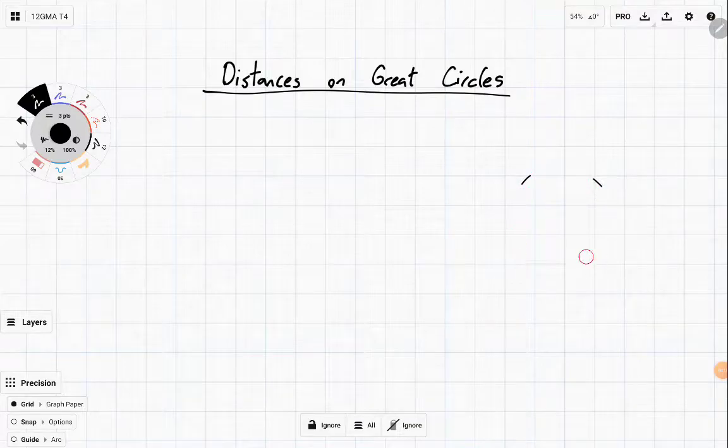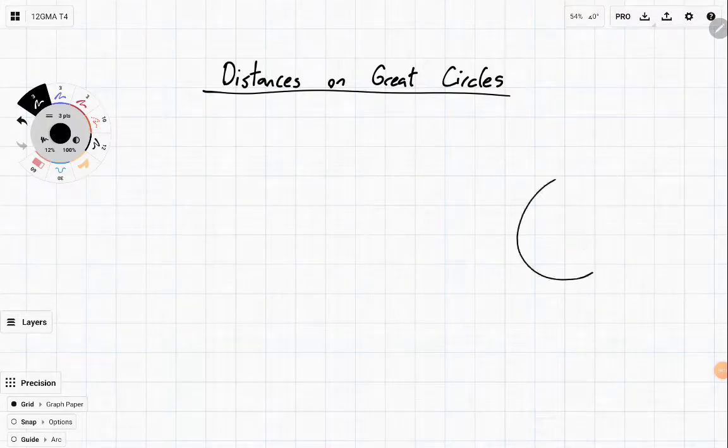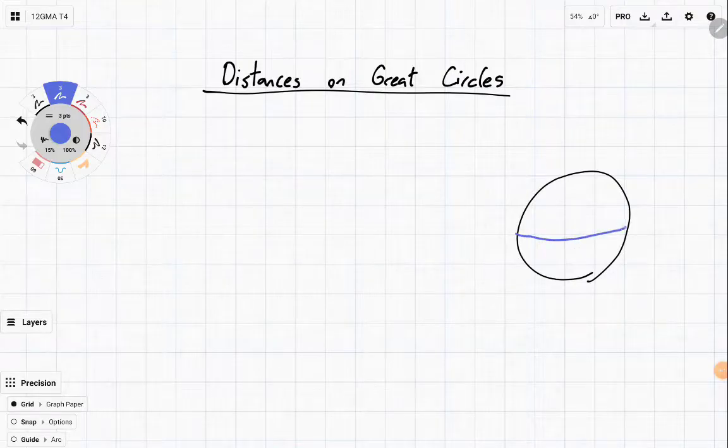The first great circle is one of the ones that we actually already know, which is the equator. The equator is a great circle. Why? Well, for it to be a great circle, it just needs to be a circle in which the centre of the Earth is its centre. Basically meaning it's the biggest circle that you can make on the Earth.